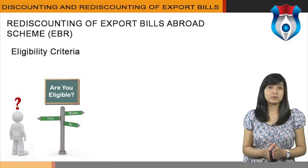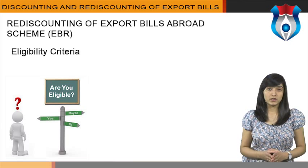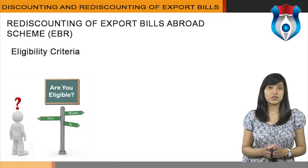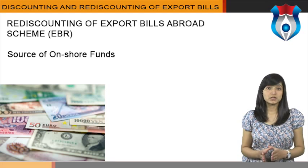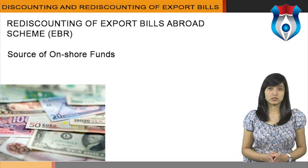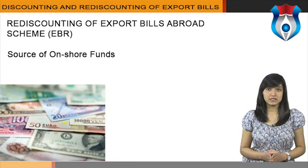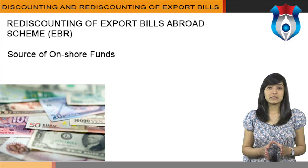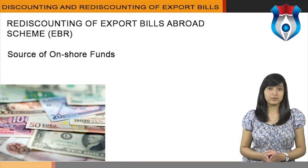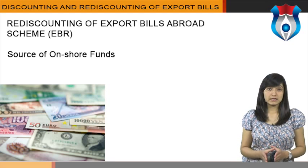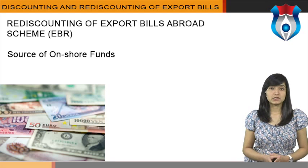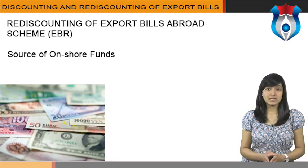There is no bar to include demand bills if the overseas institution has no objection to it. The facility under the scheme of rediscounting may be offered in any convertible currency. There will be no bar on banks to utilize foreign exchange resources available with them in Exchange Earners' Foreign Currency (EEFC) accounts, Resident Foreign Currency (RFC) accounts, or Foreign Currency Non-Resident (FCNR) accounts. Banks may also choose to discount usage bills and retain them in their portfolio without resorting to rediscounting. In the case of demand bills, these may have to be routed through the existing post-shipment credit facility or by way of foreign exchange loans to the exporters out of foreign currency balances available with the banks.